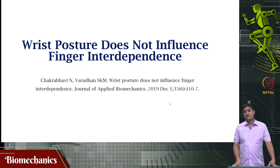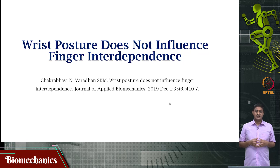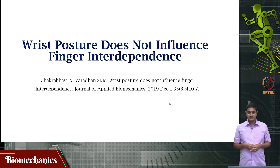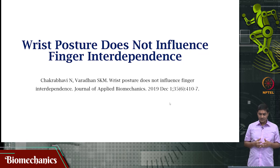In the last video, we looked at the background — what are these indices of finger interaction? These are the individuation index, stationarity index, and the enslavement matrix. The individuation index is the ability of a given finger to move independently without affecting other fingers. Stationarity is the ability of a given finger to stay stationary when a different finger is the instructed finger. The enslavement matrix defines finger-to-finger interaction among the four fingers — it is a 4 by 4 matrix.